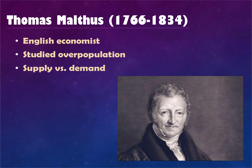Thomas Malthus was an English economist of the same period who studied overpopulation in England. He looked at supply and demand, prices, death rates and birth rates. His observation was that too many people in a city leads to disease and population decline — like the Black Plague — and that more people means less food available, causing die-offs. His ideas of overpopulation, competition, and not enough resources to go around really led into the idea of natural selection.